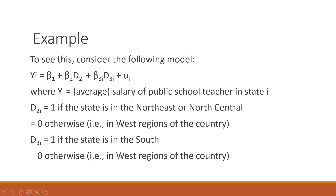Y_i is the salary of the public school teacher in state i. D2 equals 1 if the state is in the Northeast or North Central, 0 otherwise (i.e., West). D3 equals 1 if the state is in the South, 0 otherwise (i.e., West). When D2=1 and D3=0, estimates represent Northeast/North Central. When D2=0 and D3=1, estimates represent the South. When both are 0, the constant captures the average salary for the West region, which is the reference category.